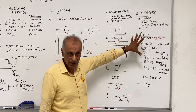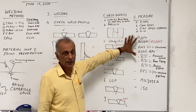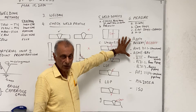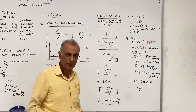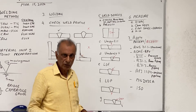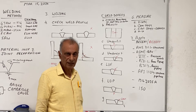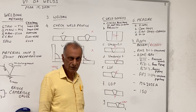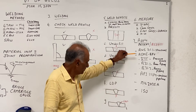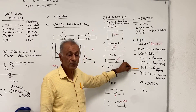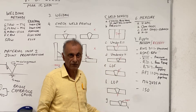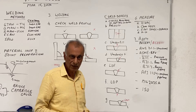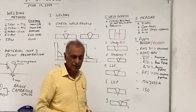Now, you need to know which code to apply — that is the first thing in step number one. If you're doing structural welding, it will most likely be AWS D1.1. If you're doing process piping, it will be ASME B31.3. Onshore pipeline would be API 1104, and so on. You don't have to remember them all, but at least you should have a copy of the acceptance criteria straight from the code to make sure you apply it correctly.